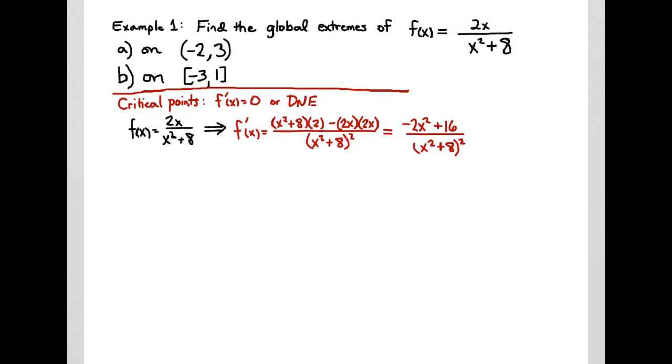We start by thinking about where the critical points are. Critical points are where we have the derivative equals 0 or the derivative does not exist. To find critical points, our first step is to calculate our derivative. We look at our original function, and it's a quotient, so I need to use the quotient rule.